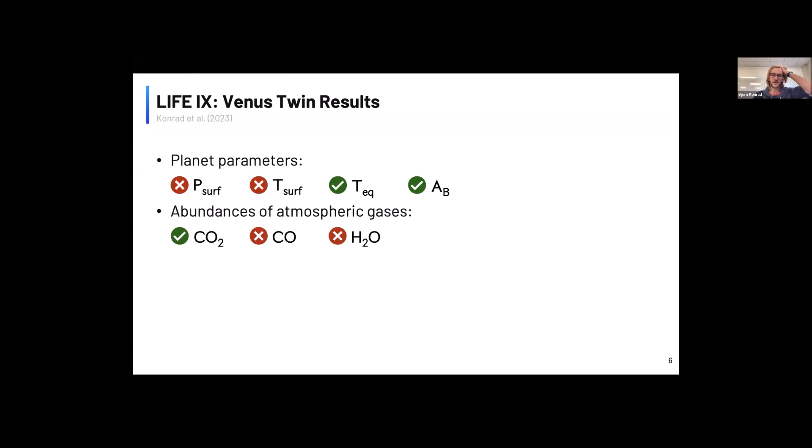Then for the atmospheric gases, we managed to show that Venus's atmosphere is CO2 dominated. So a very large portion of the atmospheric mass comes from CO2.